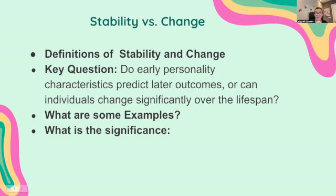Stability refers to the persistence of personality traits and behavior over time, while change refers to the potential for traits to evolve or adapt in response to experiences. The key question is: do early personality characteristics predict later outcomes, or can individuals change significantly over a lifespan? For example, a child who is highly conscientious may remain organized as an adult, while an aggressive child may become more calm due to social influences, learning, or personal growth. Understanding stability and change helps in predicting long-term outcomes and developing strategies for personal growth and behavioral interventions.